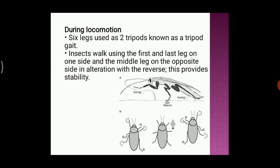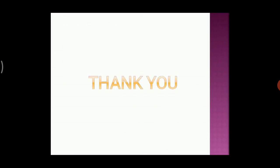This tripod gait gives stability to the body while walking. The tripod gait changes its direction according to the walking style or walking direction of the insect. That is it for today's lecture. Thank you.